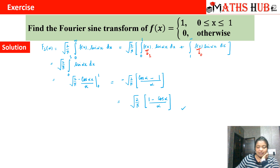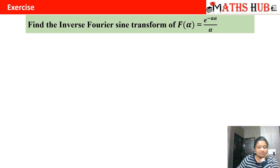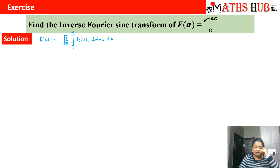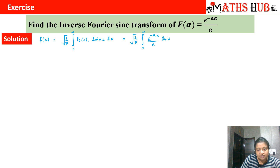Now let us move into more complexity. We have to calculate the inverse Fourier sine transform of Fs(α) = e^(−aα)/α. Applying the inverse formula: f(x) = √(2/π) ∫₀^∞ Fs(α) sin(αx) dα, we get f(x) = √(2/π) ∫₀^∞ (e^(−aα)/α) sin(αx) dα.